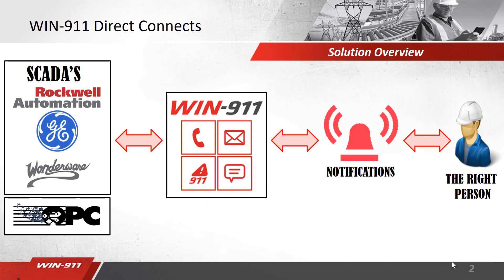First, how does WIND911 work? WIND911 has a direct connect feature for Rockwell Factory Talk Alarm Events, GE iFix, Simplicity, Wonderware System Platform, InTouch, and InTouch ME. With these SCADAs, you can use a direct connect feature to not only deliver the alarms to the end user, but also allow them to remotely acknowledge the alarm. The notification types include voice, email, a mobile app for your smartphone, or SMS. If you're not using one of these SCADA types, you can use OPC to connect to our software.